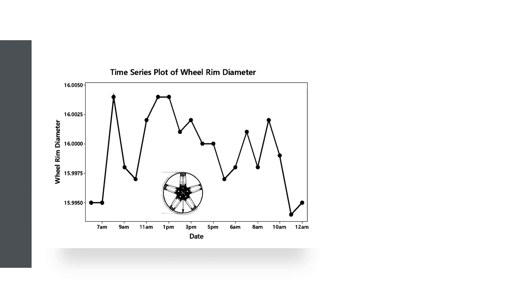To study the wheel manufacturing process, we can collect wheel rim diameter data at specific times throughout the day and plot this data on a time series plot. In Chapter 1, we used time series plots to discover time-related patterns in data. The time series plot of wheel rim diameter data suggests that there is some variation in the process.